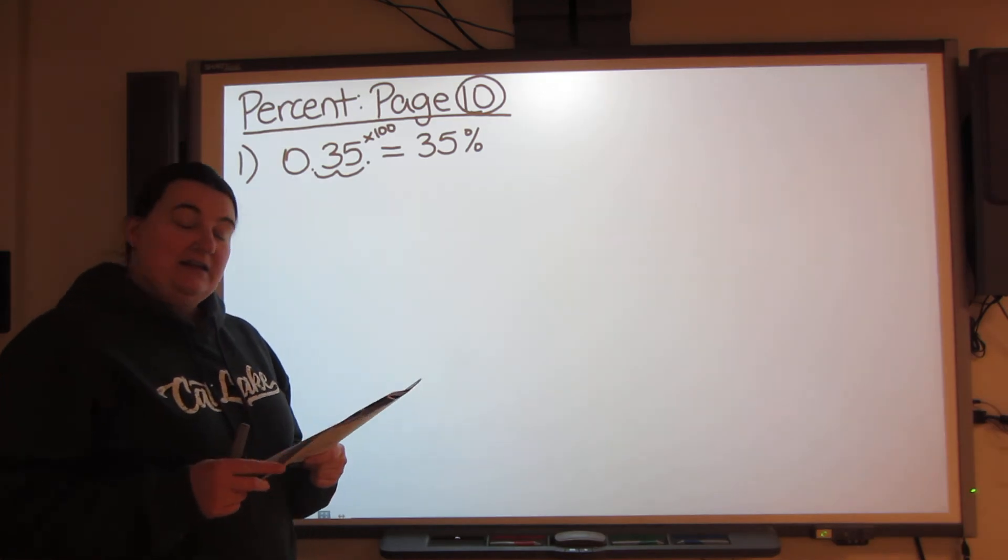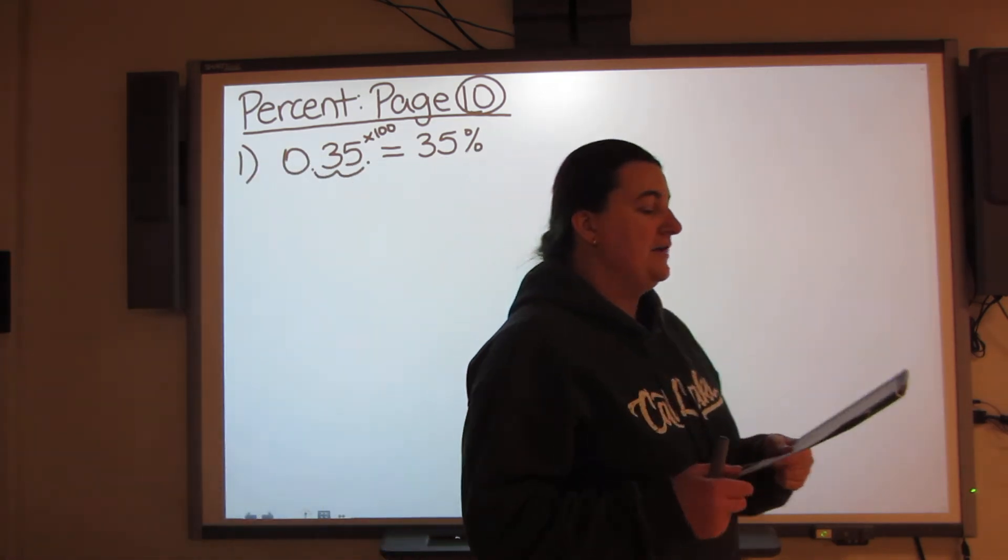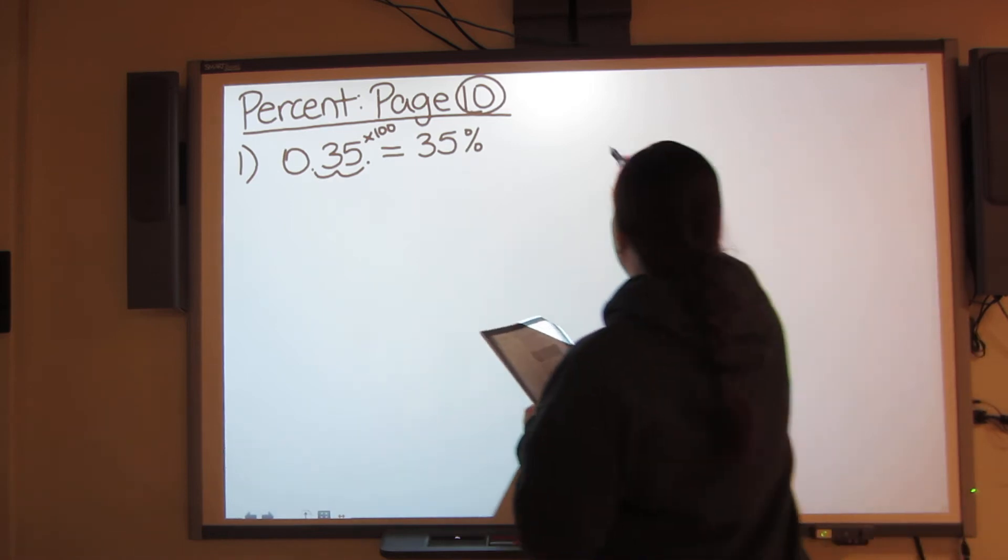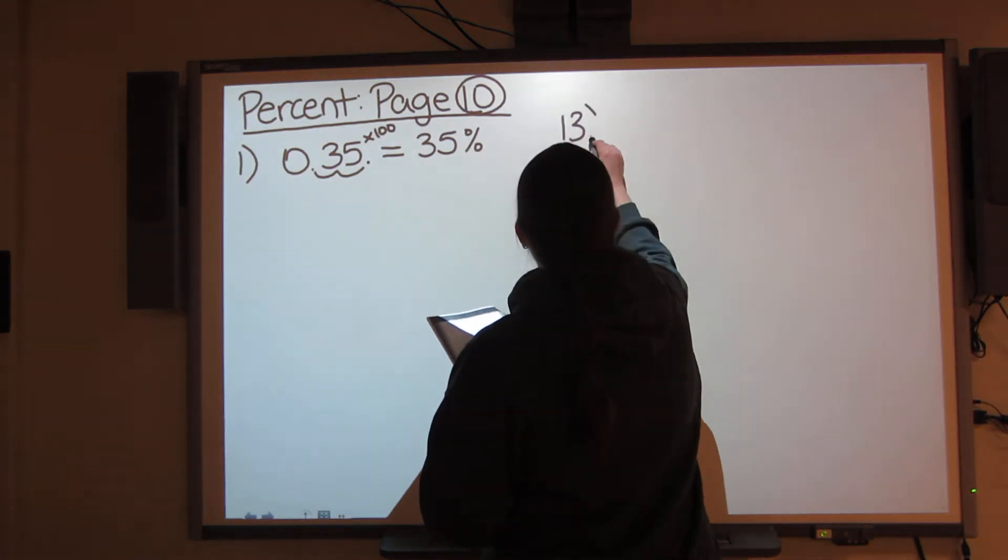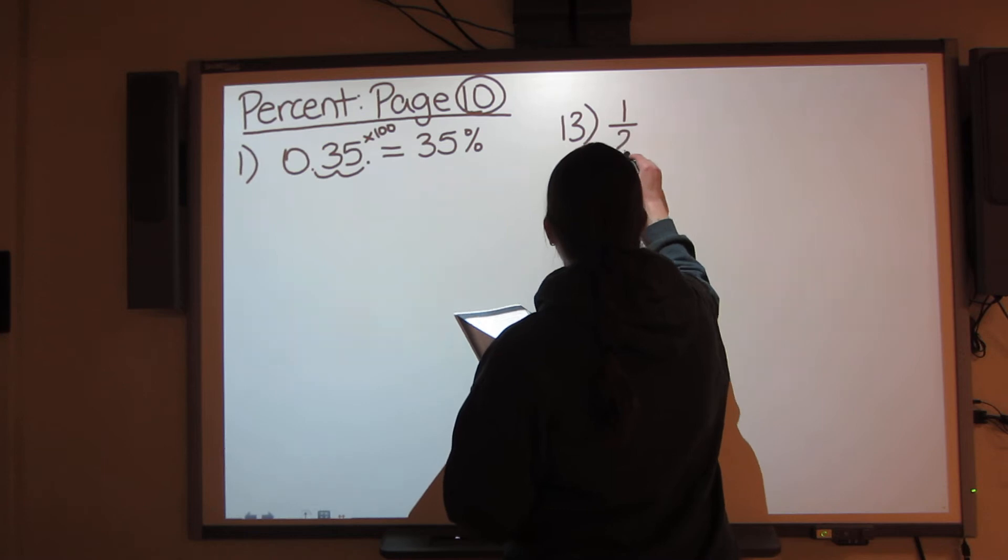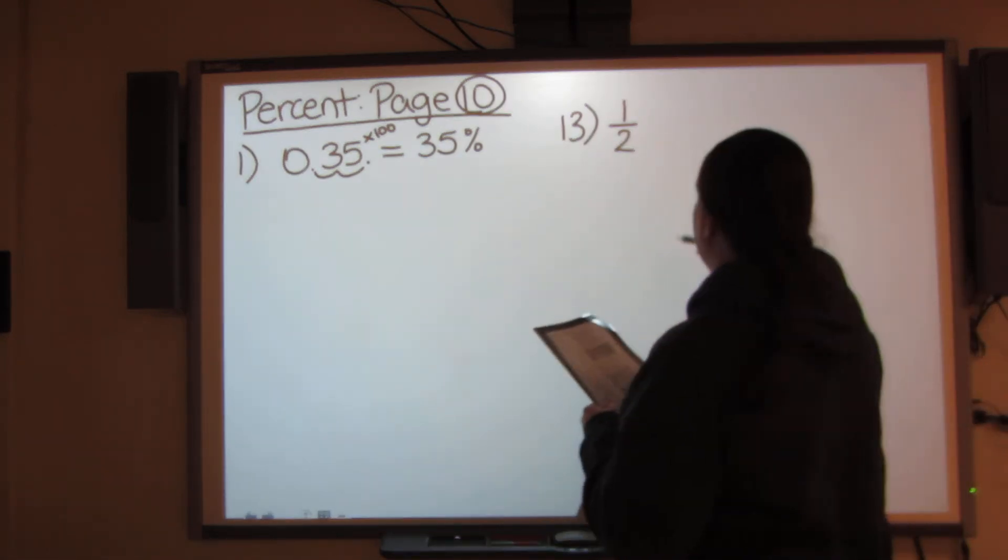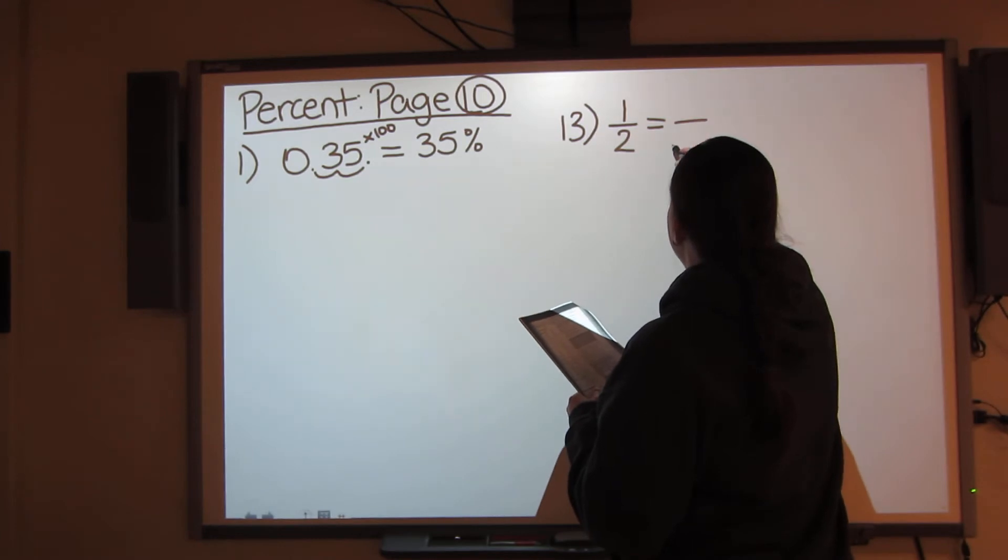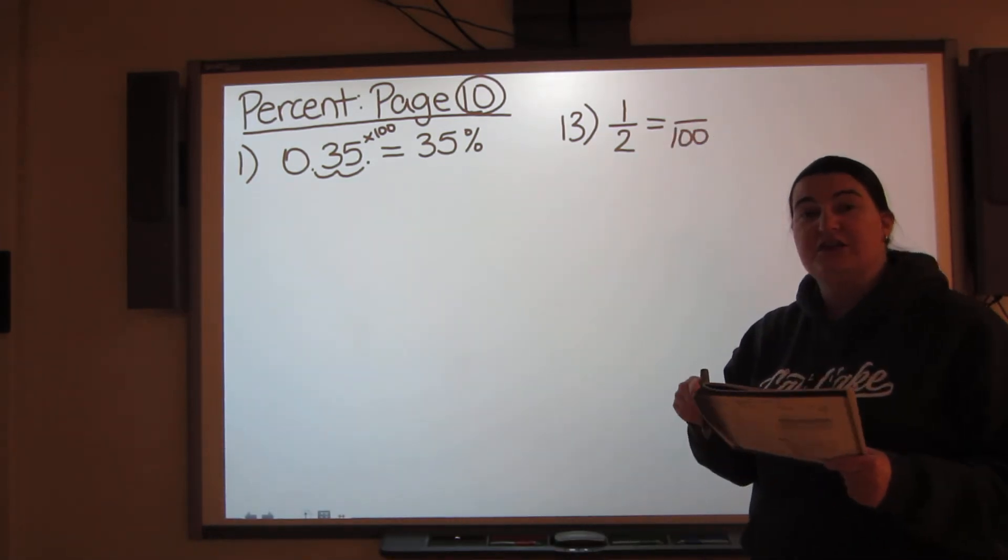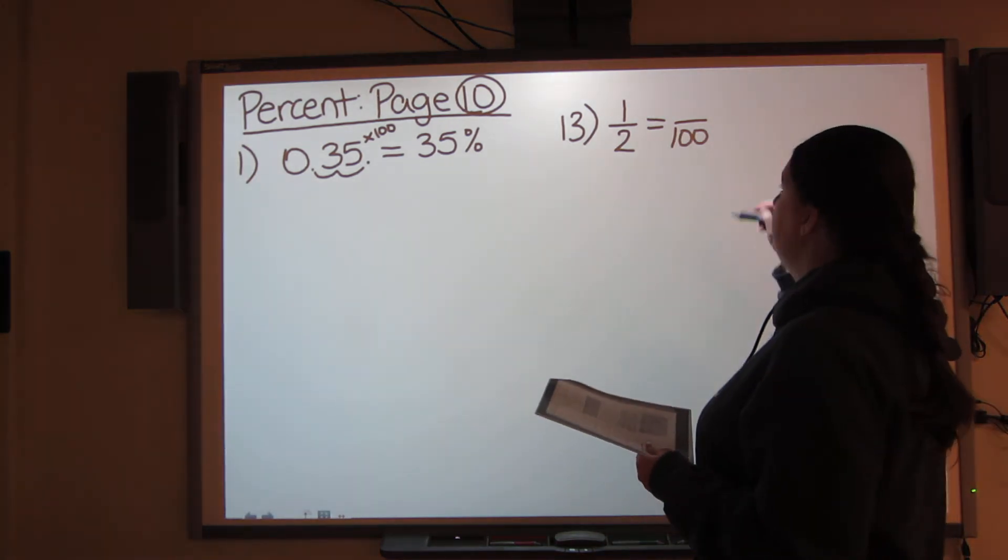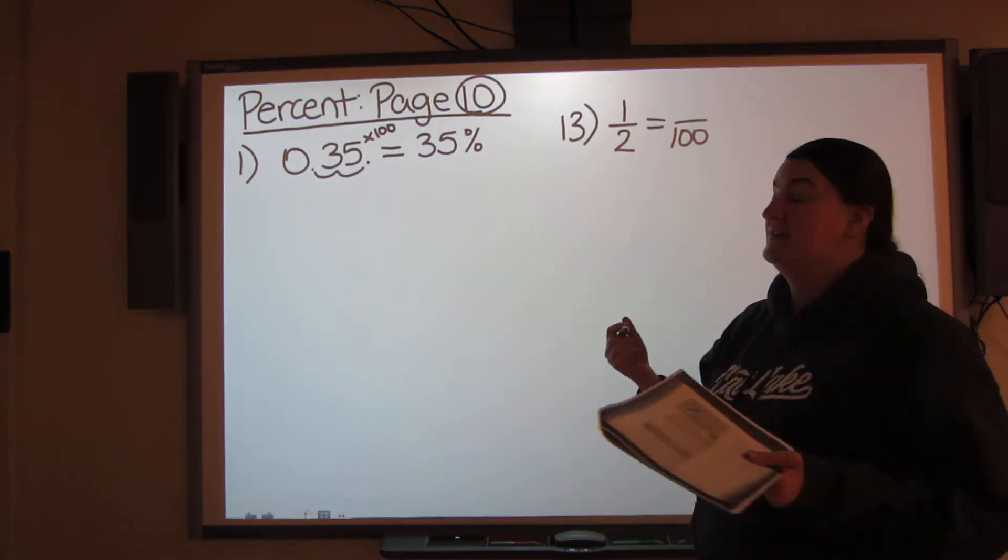Number 13 all the way to number 24, you're changing fractions to percents. So number 13, I have 1 over 2. Now to change fractions to percents, we've done this before, where you want to change it to an equivalent fraction with 100 on the bottom. If 100's on the bottom, that means whatever's on the top is your percent.